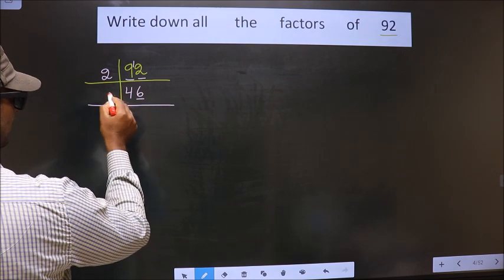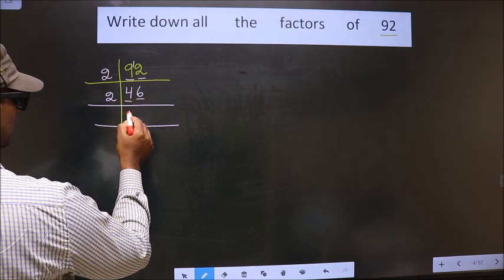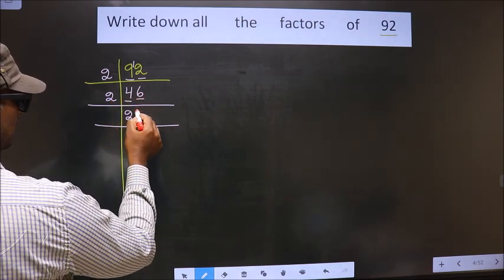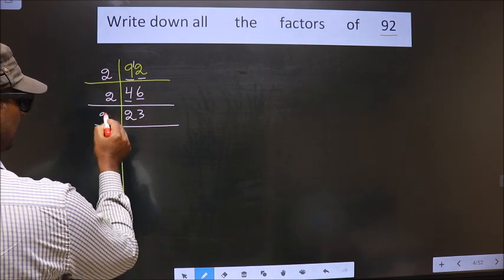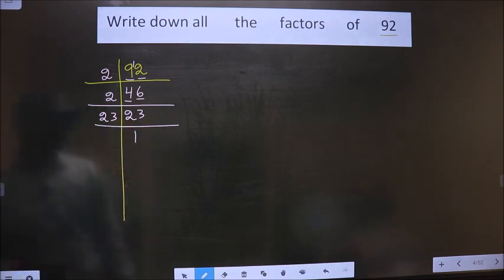Now for this number, last digit is 6 which is even, so we take 2 here. First number is 4, when do we get 4 in 2 table? 2 times 2 is 4. Next number is 6, when do we get 6 in 2 table? 2 times 3 is 6. Now here we got 23. 23 is a prime number, so we take 23 once.